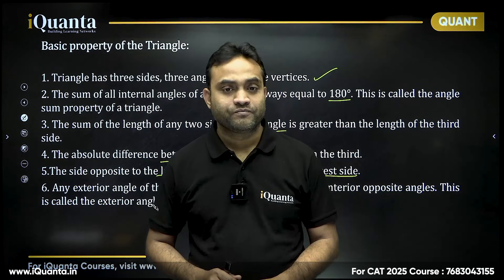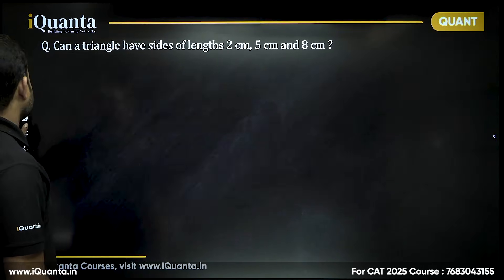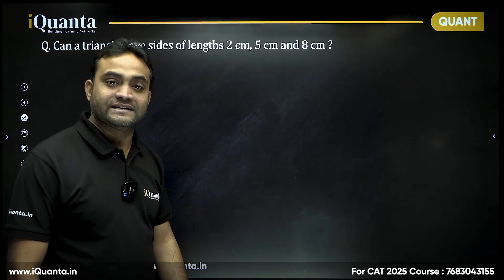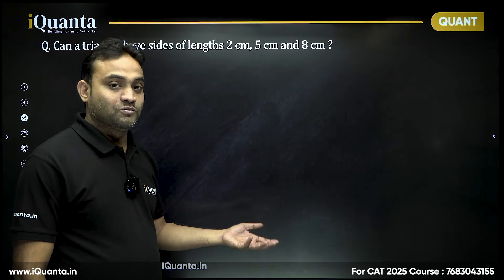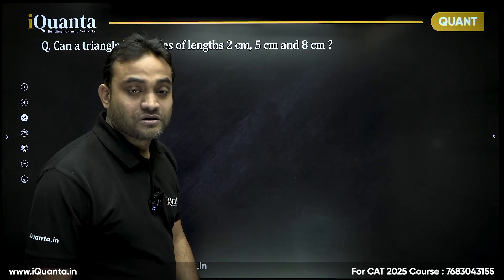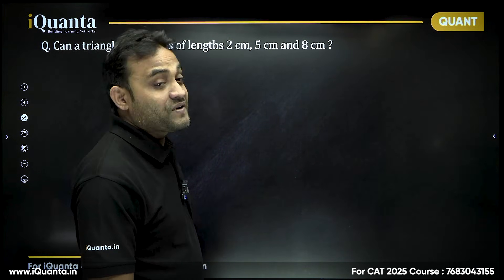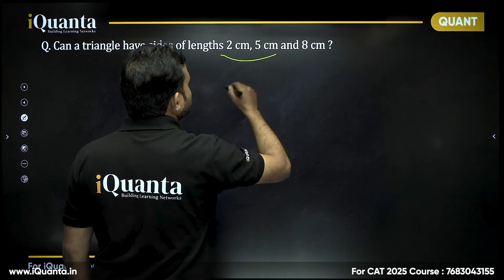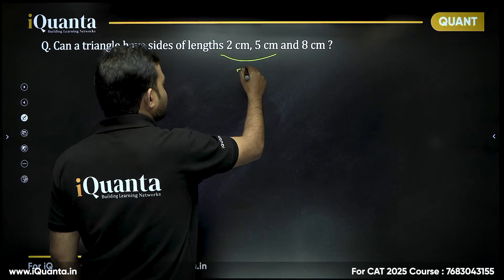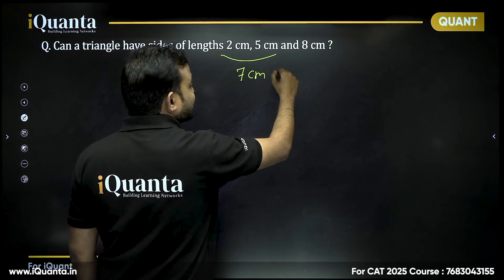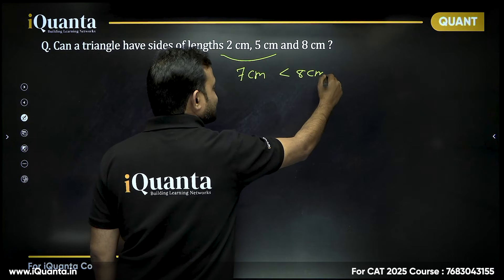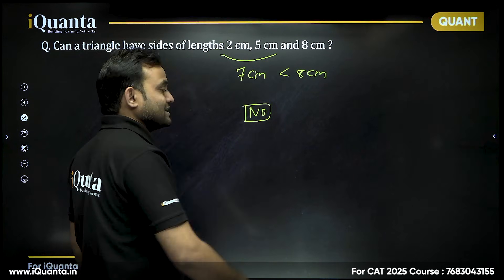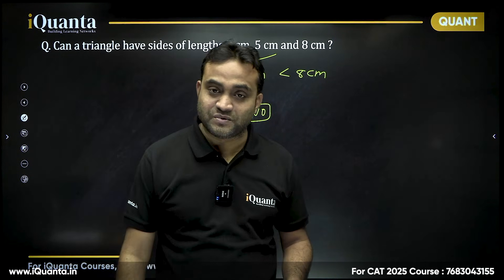First question: Can a triangle have sides of length 2 cm, 5 cm, and 8 cm? We know the sum of any two sides must be greater than the third. Checking: 2 + 5 = 7, which should be greater than the third side, but 7 is less than 8. So the answer is no — these three side lengths cannot form a triangle.